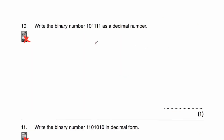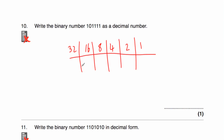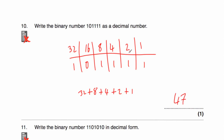Question ten says, write the binary number 1011111 as a decimal number. Putting in our columns: 1, 2, 4, 8, 16 — that's five, but our number has six digits, so we need one more: multiply by 2 is 32. Our number is 1011111. So we do 32 plus 8 is 40, plus 4 is 44, plus 2 is 46, plus 1 is 47. The binary number 1011111 is 47.